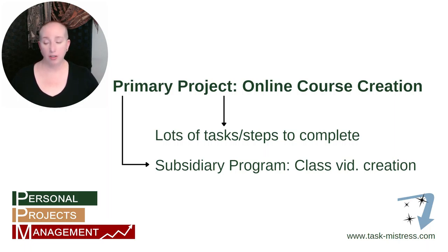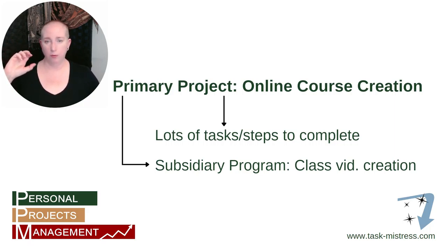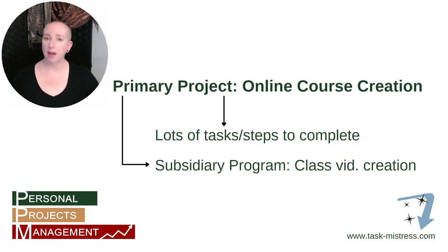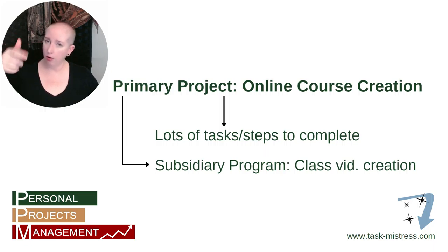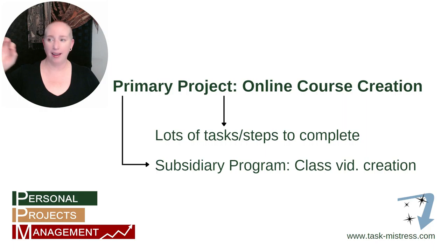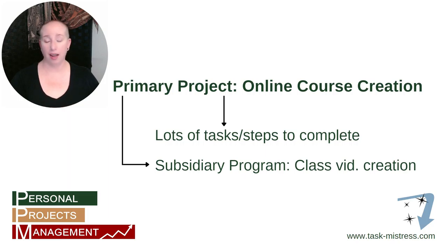There's a lot of steps, but you can batch things together — script 10 outlines in one day, then record four or five videos all at once another day. You're still not going to do it all in one day, so you need a way to track it — that's why you have a subsidiary program worksheet. On the primary project worksheet for online course creation, you'd have a step that says 'Create Class Video,' and that single line item represents everything on the subsidiary class video creation worksheet.